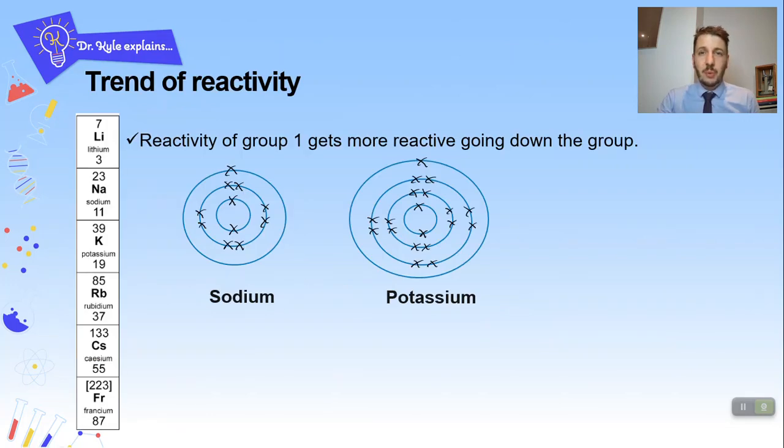Okay so what we need to look at now is the trend in reactivity. Trend means pattern. So the reactivity of Group 1 metals is that they get more reactive going down the group. Okay so the pattern is that they are getting more reactive going down the group like this. So looking at sodium and potassium as examples here we can use this as an example to see and explain why this is.